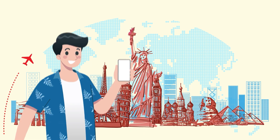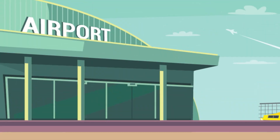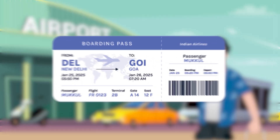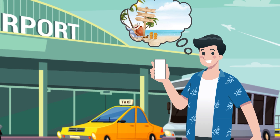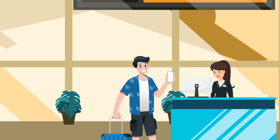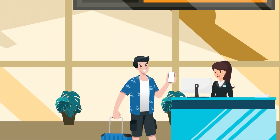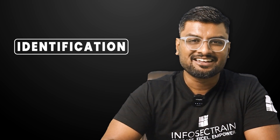Let me explain with a basic example. My friend Mukul wants to travel and went to the airport, traveling from Delhi to Goa. He told the airline team, 'My name is Mukul and I'm traveling from Delhi to Goa.' The airline team then checks his name in the list — verifying whether this person is on the list or not. That is called identification.